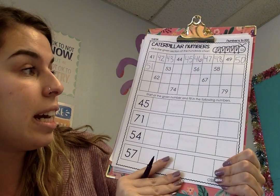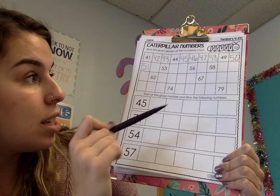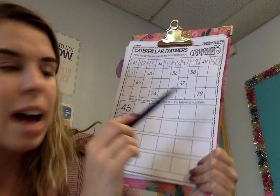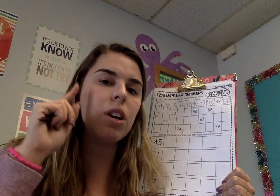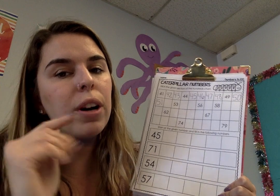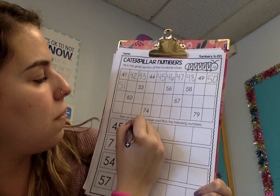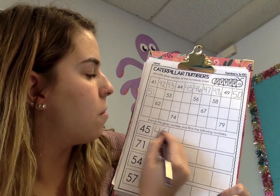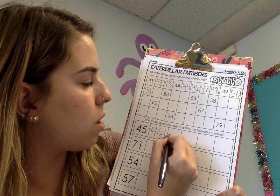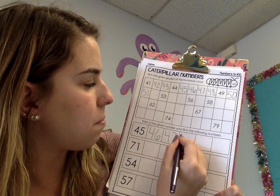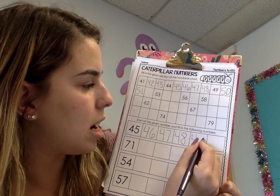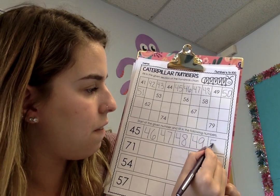The second part down here — you can use the top part to help you once it's all completed — but it's going to start you at another random number and you have to fill in the rest. This one starts at 45, so I hear 4 and then a 5. After 45 is 46 — I hear 40 and then 6. Then I just keep going: 47, 48, 49, 50.